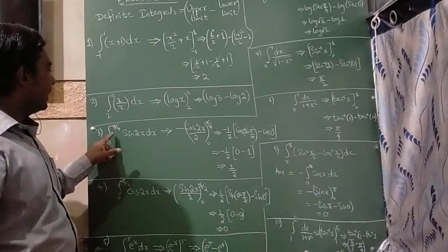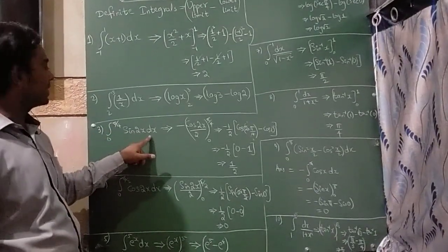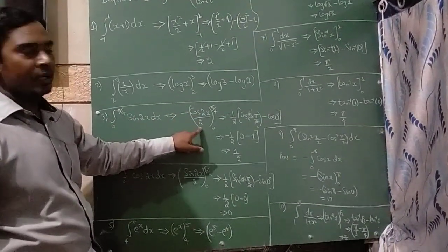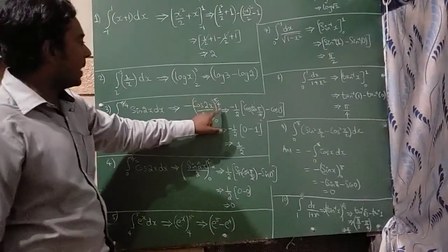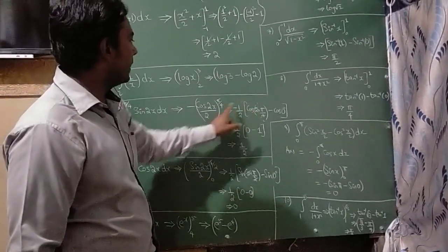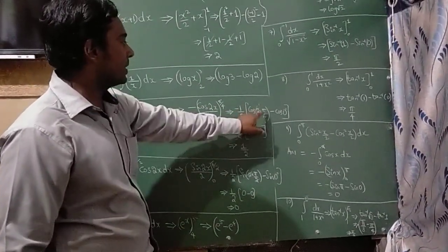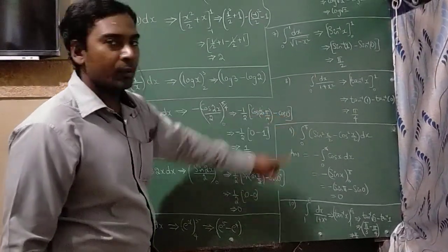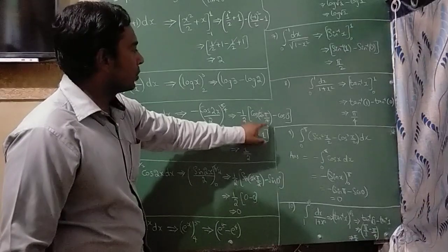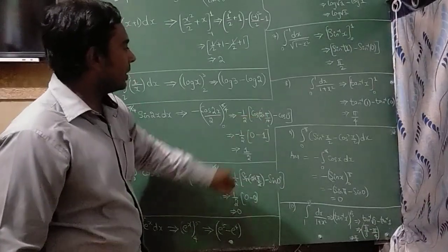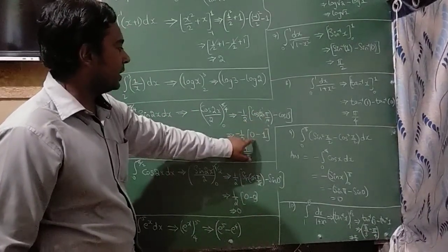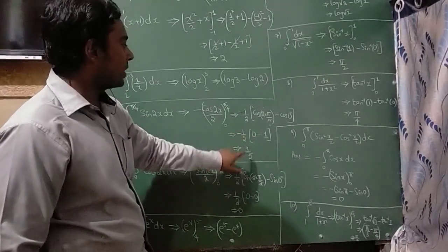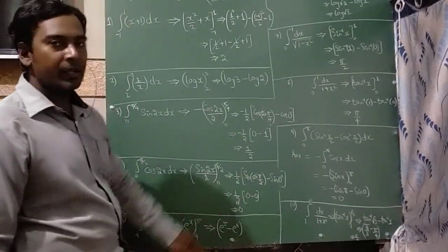The third question is integration of sin 2x dx with limits 0 to π/4. Integration of sin 2x is −cos 2x divided by 2. Substituting the upper limit π/4: cos(2·π/4) = cos(π/2) = 0. Substituting the lower limit 0: cos 0 = 1. Minus into minus becomes plus, so the answer is 1/2.